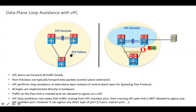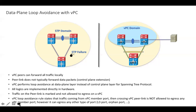However, traffic received on the peer link can be sent out of other ports, like a Layer 3 port or orphan port. So we are sending out of an orphan port, but not out of any member port. To summarize: VPC will not allow traffic that was received on the peer link to be sent out of any VPC member port. Let me go through a packet walk to understand this.